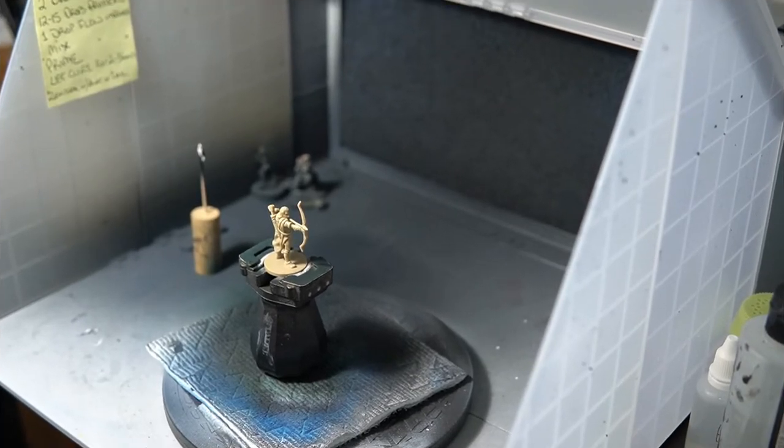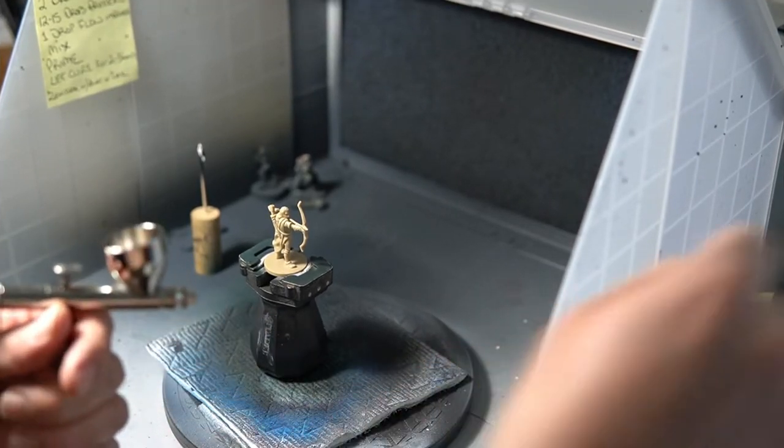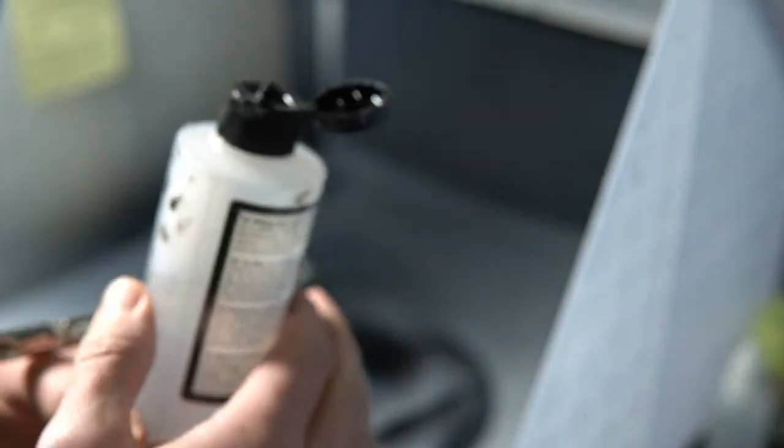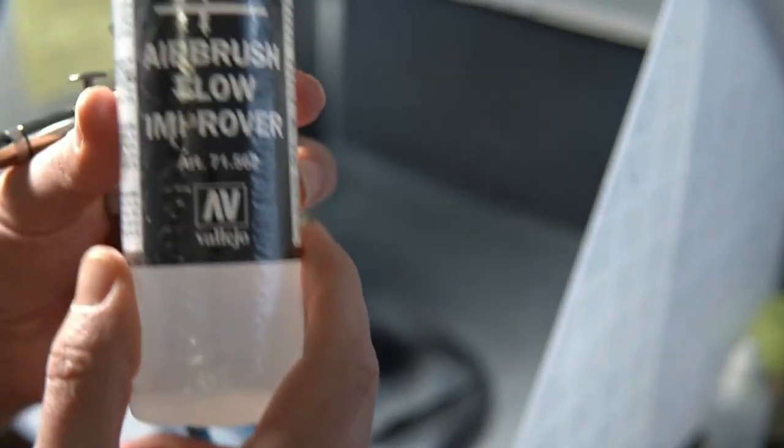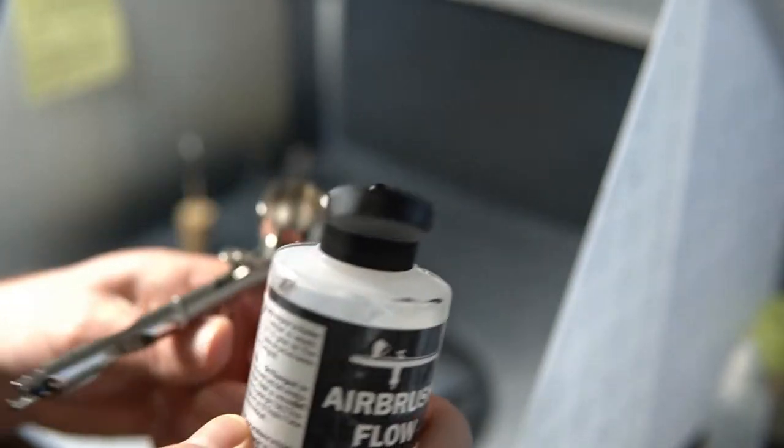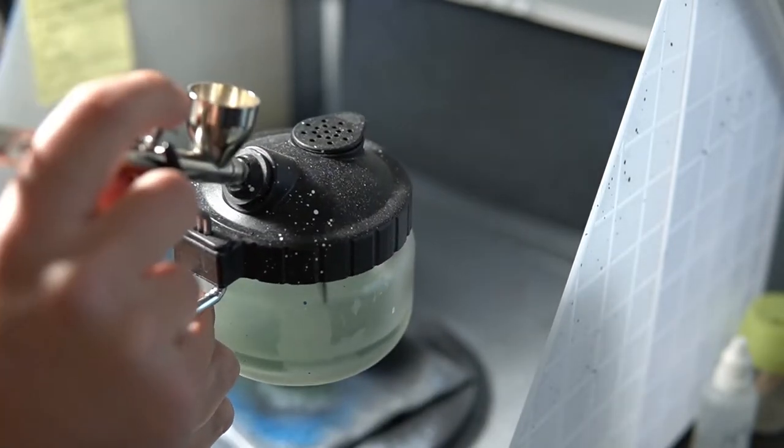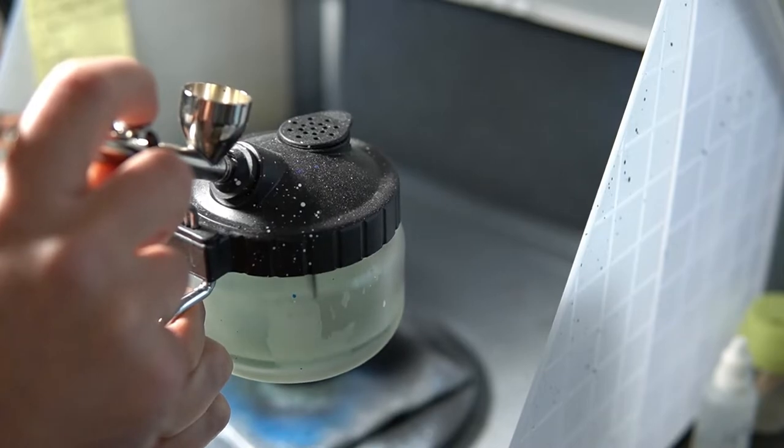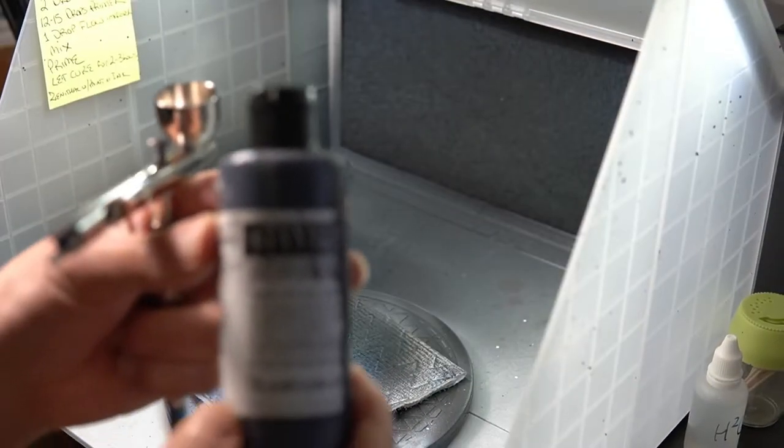Okay, so let's see the Badger Patriot 105 in action a little bit. We're going to prime Legolas from the Lord of the Rings box set. Before I prime, I like to just put a little bit of flow improver into the airbrush. It just keeps the needle from getting clogged and paint drying on it. I'll just shoot that into my cleaning pot here. Takes a couple of seconds, no big deal.